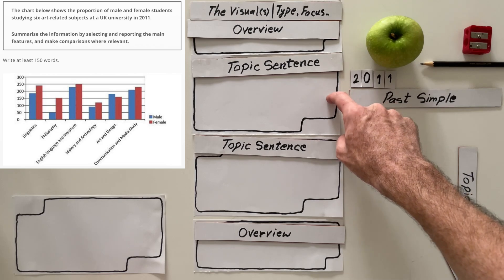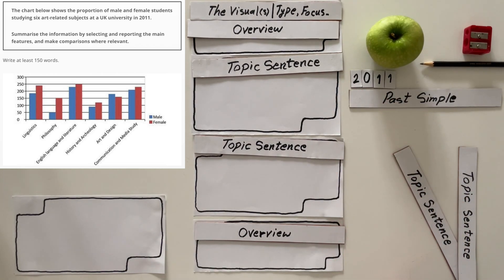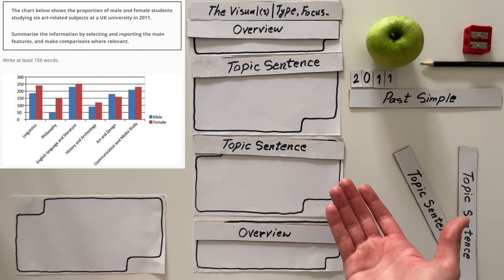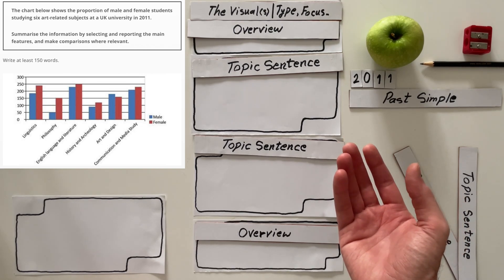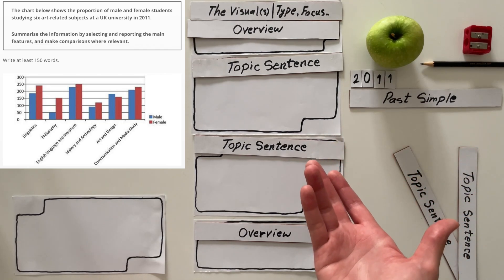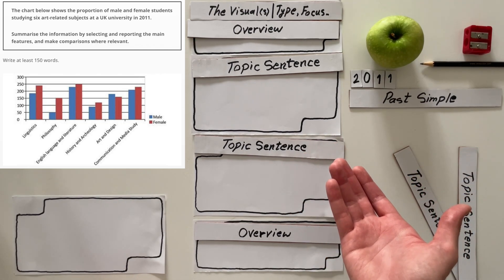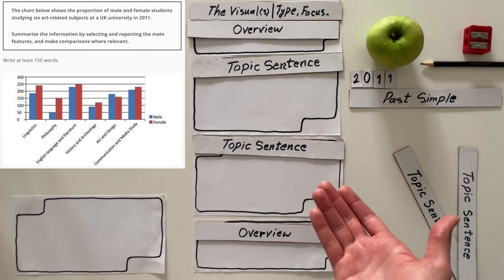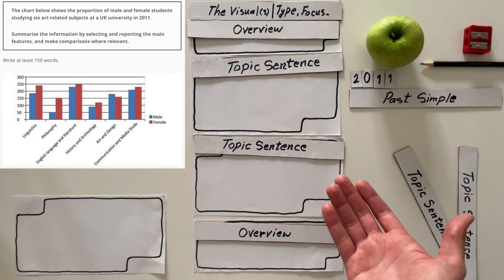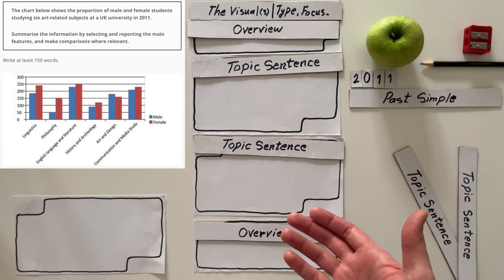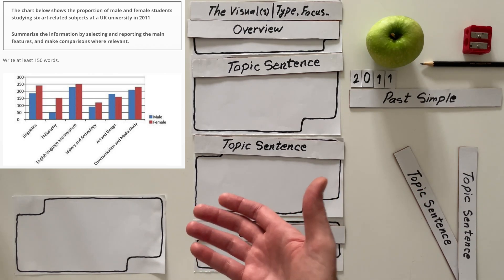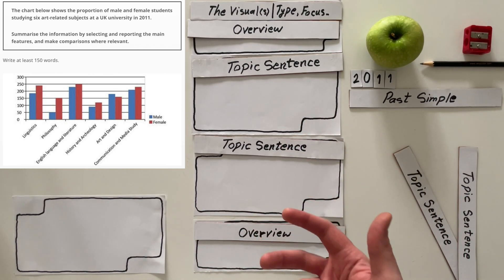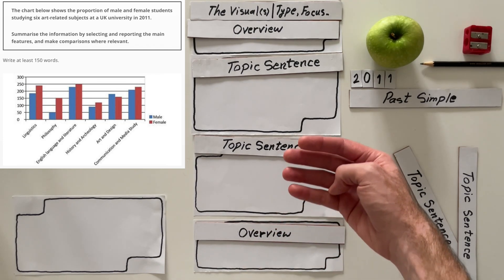And you can even divide the information into the difference. So, if the difference is not significant, for example, communication and media study, not that important. The difference is less than 20, less than 30 to be safe. That's the same story for art and design. That's almost the same story for history and archaeology, or English language and literature. But linguistics and philosophy, they have a meaningful gap, a significant gap between the number of male students and female students. So, that can be another way that you can report. You can report four in one and two in another.